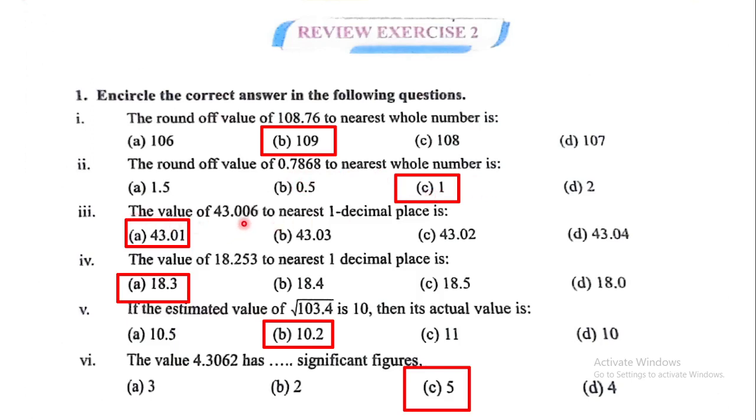The value of 43.006 to nearest one decimal place is? Option A is correct. The value of 18.253 to nearest one decimal place is?